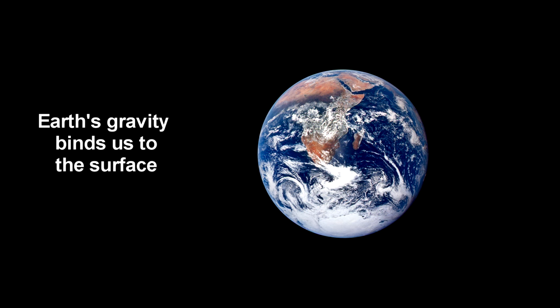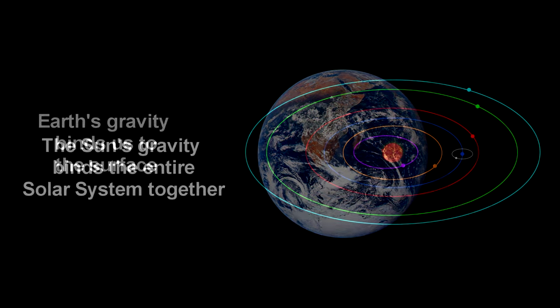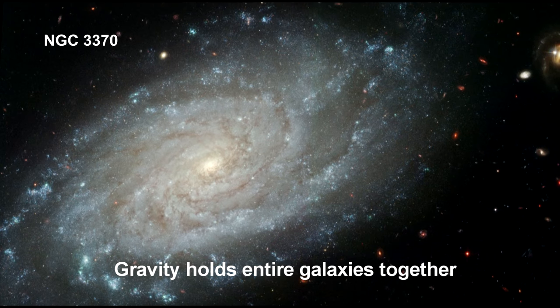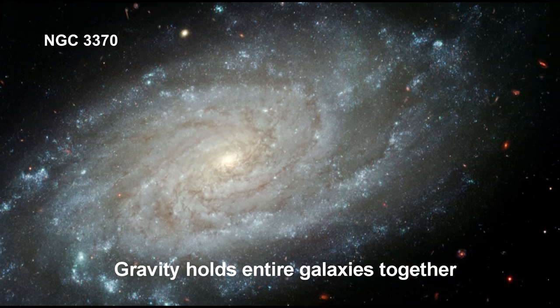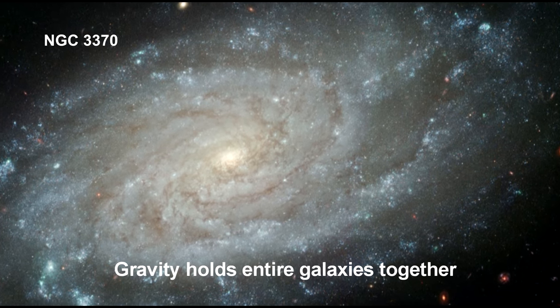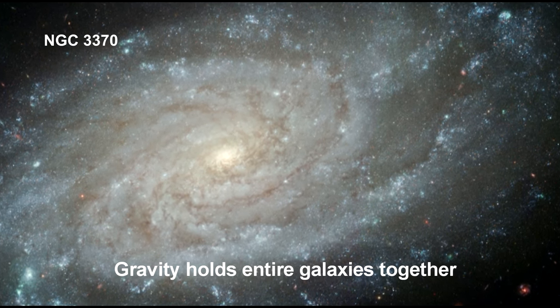Newton broke Aristotle's 2,000-year-old dictum that there are two sets of rules for nature. One set for here on Earth and another set for the heavens. With Newton, we came to understand that there is only one set and it applies everywhere.